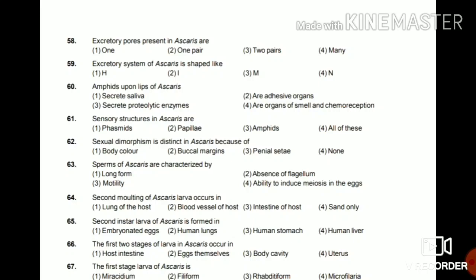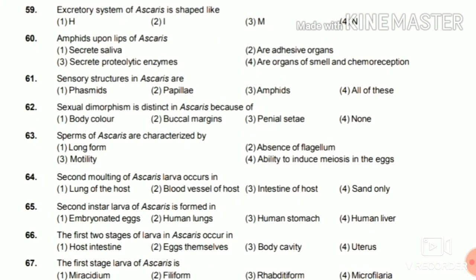Question 66: The first two stages of larva in Ascaris occur in host intestine, eggs themselves, body cavity, or uterus? The answer is eggs themselves. Question 67: The first stage larva of Ascaris is miracidium, filiform, rhabditiform, or microfilaria? The answer is rhabditiform. That's all for this final — thank you.